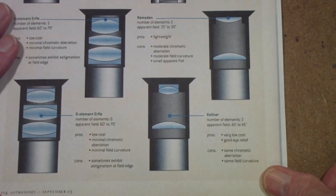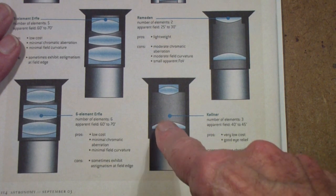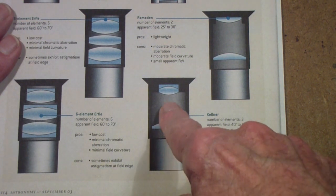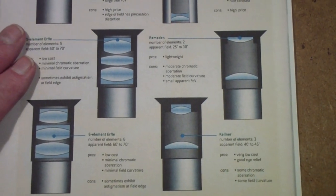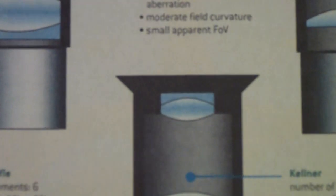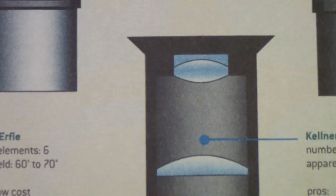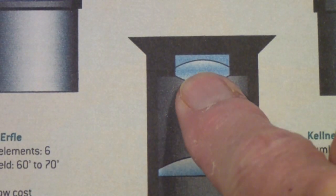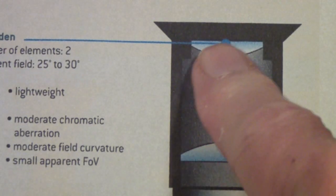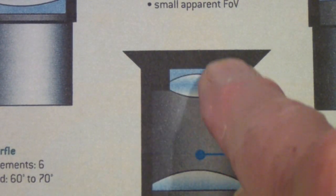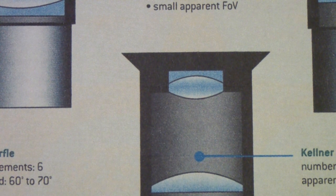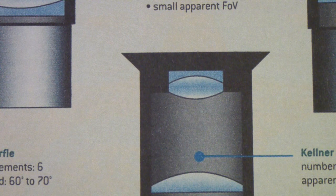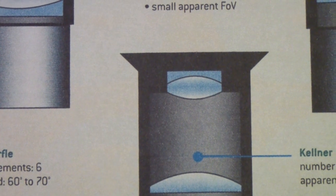Another design that you often find in cheaper telescopes is a Kellner—it's a three-element design. You may or may not be able to see, if I zoom in a little bit, that the top lens, instead of being a single lens like in this case, is actually two lenses glued together. So that is a Kellner. Let's take a look at a few more, and by the way, I'm doing these sort of in order of how good they are.